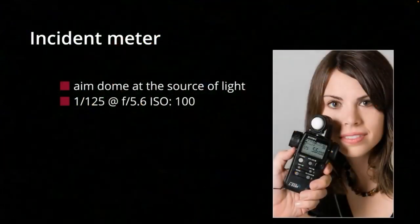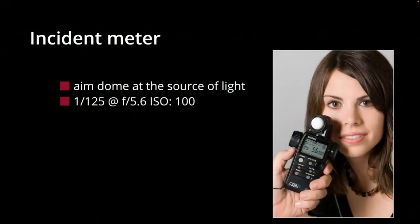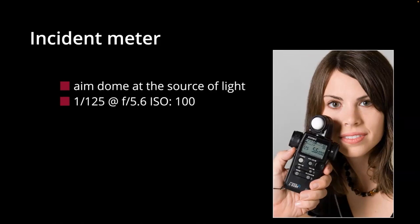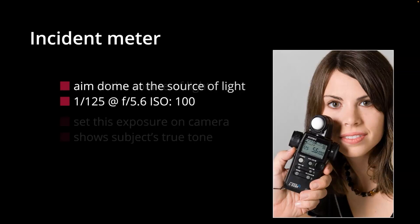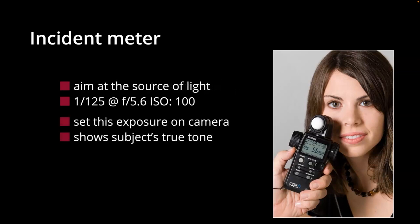So the incident meter — we aim the dome at the source of light. In this case it's 1/125th at f/5.6 at ISO 100. I'm currently using a Sekonic L-750 or L-858, the digital version. That gives the proper exposure: set it on the camera and no matter what color subject you put in front of it, you'll see the correct tone.